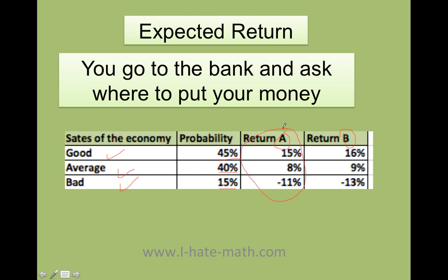Just concentrate on this area here. This is Stock A and this is a probability. There is a 45% probability you're going to have a 15% return, a 40% probability you're going to have only an 8% return, and if the economy is really bad, you will actually lose money because you have a negative 11%. Now, Stock B: if you have a good economy, it's a 16% return; 40% probability on an average economy that you're going to get 9%; and if you have a bad economy, you can actually lose money — it's a negative 13%.